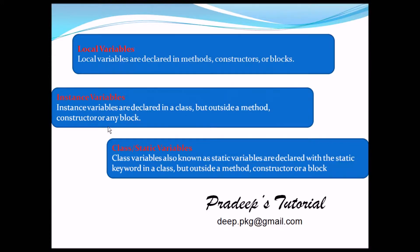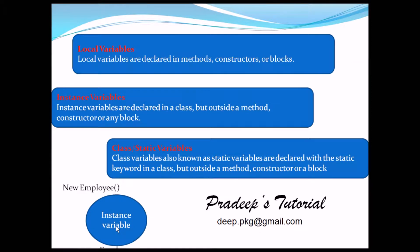An instance variable is at the object level, while a static variable is at the class level. When we create an object — say, 'new Employee' — that employee object will have the instance variable but not the static variable or the local variable. We'll discuss more about local variable, instance variable, and what goes to stack versus heap in the next chapter. For now, this chapter will concentrate more on variable types.